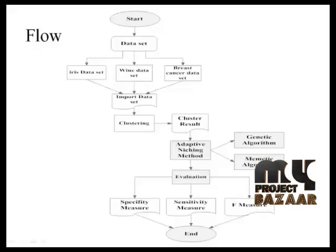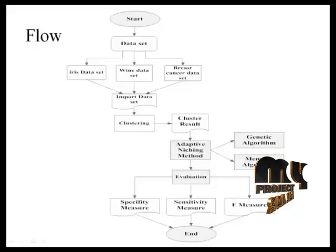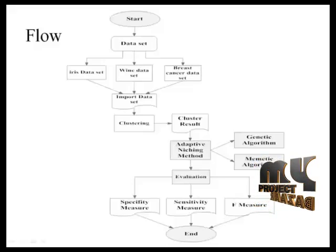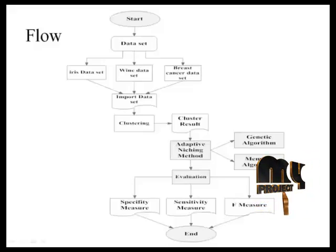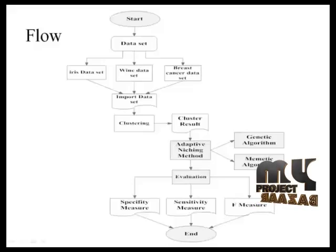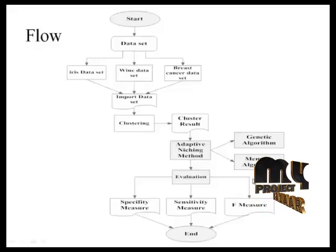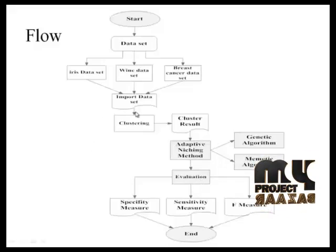The other algorithm is the mimetic algorithm. In the mimetic algorithm, we initialize the population value at runtime. Based on this population value, we calculate the crossover and fitness function value. The fitness value is calculated based on the fitness function from the population. Based on population, fitness, and crossover values, we obtain the offspring value. We initialize the parent values — parent1, parent2, and parent3 — to get the offspring and final result. Based on these genetic and mimetic algorithms, we evaluate the project.